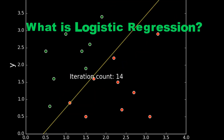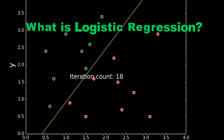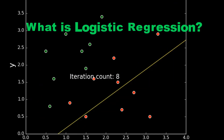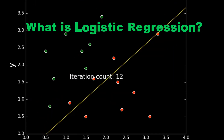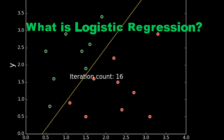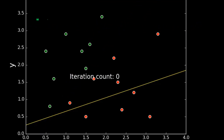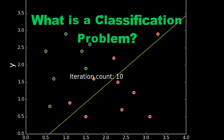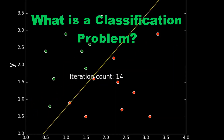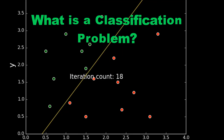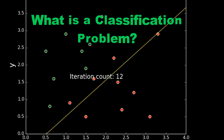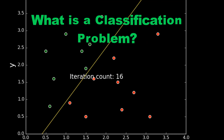The column values used to predict the output are called features or independent variables, and the column value that is predicted is called the dependent variable or label. A machine learning problem is called a classification problem when feature variables are continuous in nature and the target variable is in categorical form — for example, predicting diabetes as the target variable using blood pressure and glucose level in blood as features.